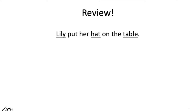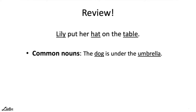Nouns refer to many things and can be classified into different categories. Common nouns refer to any type of people, places, or things. For example: the dog is under the umbrella. Dog is the name of an animal, and umbrella is the name of a thing.